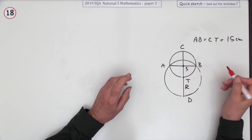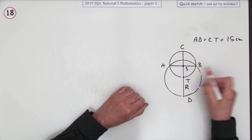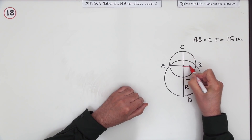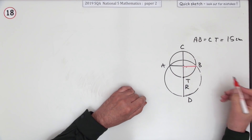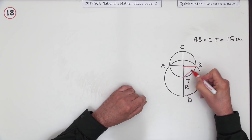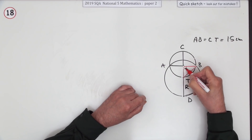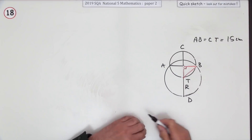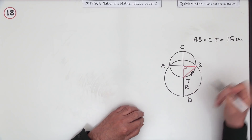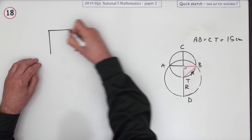As soon as you see a chord question, draw in a right-angle triangle. You form a right-angle triangle by going halfway along the chord, drawing in the radius from the centre, and drawing the distance from the centre to the chord. That gives the right-angle triangle — because that radius there is the same as this radius here.